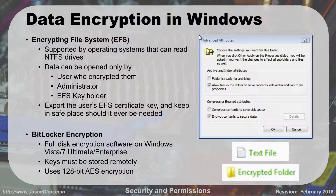BitLocker encryption is the newer version of encryption — much stronger than EFS. It only comes in the Enterprise and Ultimate editions of Vista and 7. It gives you full disk encryption using 128-bit AES (Advanced Encryption Standard). The key has to be stored remotely, so when you lock it with BitLocker, you'll save that key either to a USB thumb drive or burn it to a DVD. Put it in a safe, and that way if you need to unlock that data later, you can.